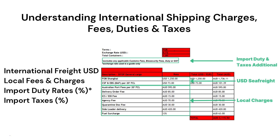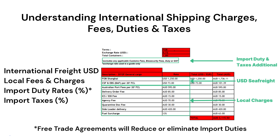Local fees and charges in the country of import — make sure these costs are in your local currency. These fees typically include local port handling fees, documentation and customs clearance fees, any applicable biosecurity or quarantine fees, and domestic trucking delivery fees. To confirm the import duty rate, you will need to classify the goods with the customs department of the importing country. The supplier may help provide part of the HS code classification, or you can ask a local customs broker to classify the goods and confirm the applicable import duty percentage. Note that if the country of export and country of import have a free trade agreement, it can reduce or eliminate the import duty rate payable.